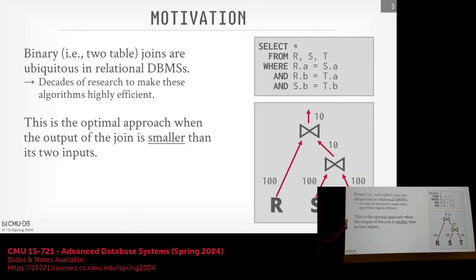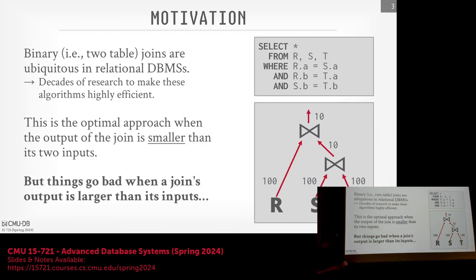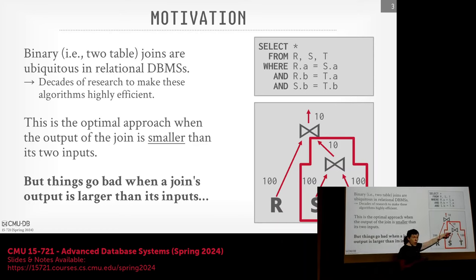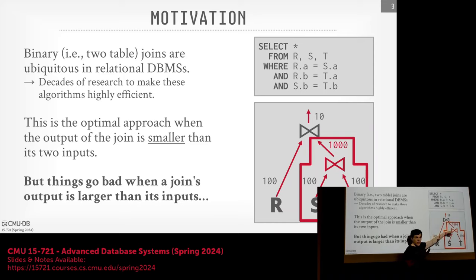Binary joins are going to be the preferred approach when we know the output of the join operator is going to be smaller than its inputs. Say we're joining R, S, and T — we join S and T and produce 10 tuples. The problem is when the output of the join operator is going to be larger than the inputs. This is the worst-case scenario for databases because now we have to materialize that. Even though joining S and T might produce 1,000 tuples, when we join that output with R we end up with 10 tuples — we materialized a bunch of data we end up throwing away anyway.